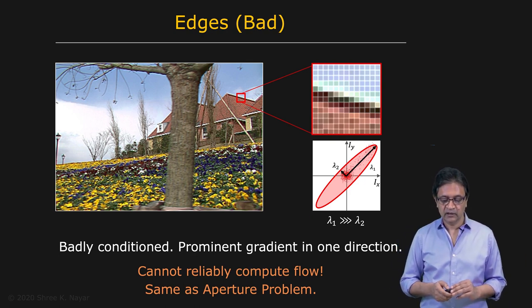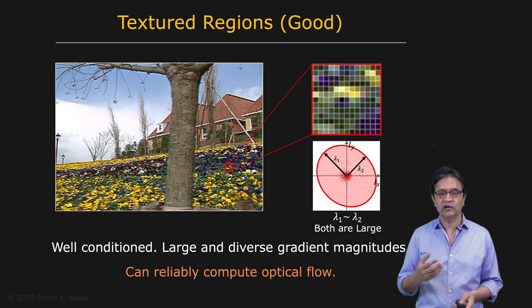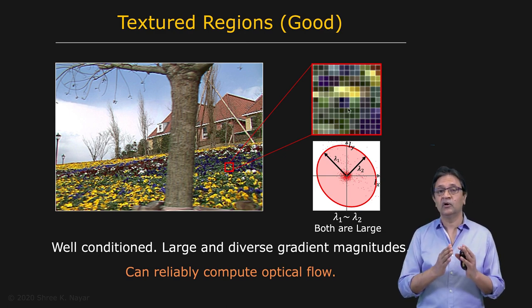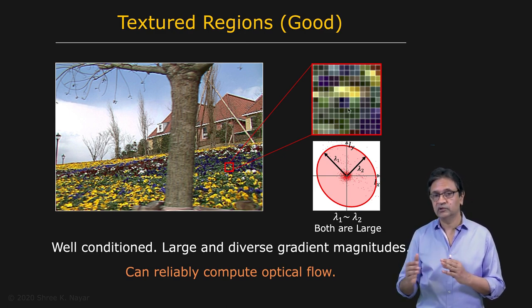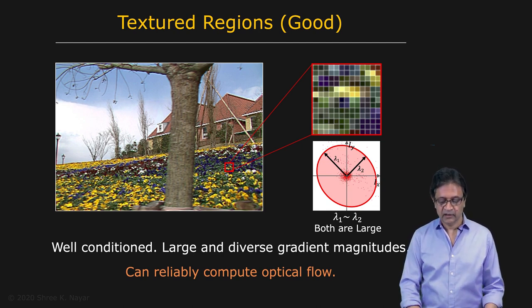So the good case for us is when you have rich texture. When you have texture that looks like this, with lots of different brightness values or changes in brightness in both directions, then you can imagine that when you find the spatial derivatives Ix and Iy, they're going to be scattered and you're going to get large eigenvalues.